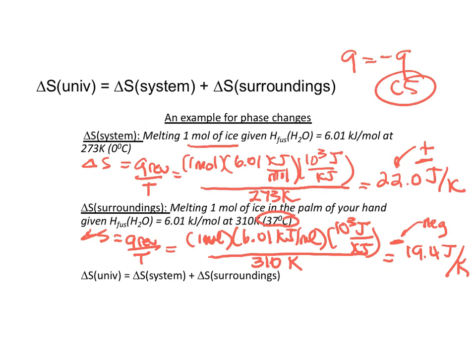So in the big picture, if I'm trying to calculate ΔS of the universe, I will take my ΔS of the system, which is 22, and I will add to that my ΔS of the surroundings, which is minus 19.4, and I will come up with still a positive number, 2.6 joules per Kelvin.